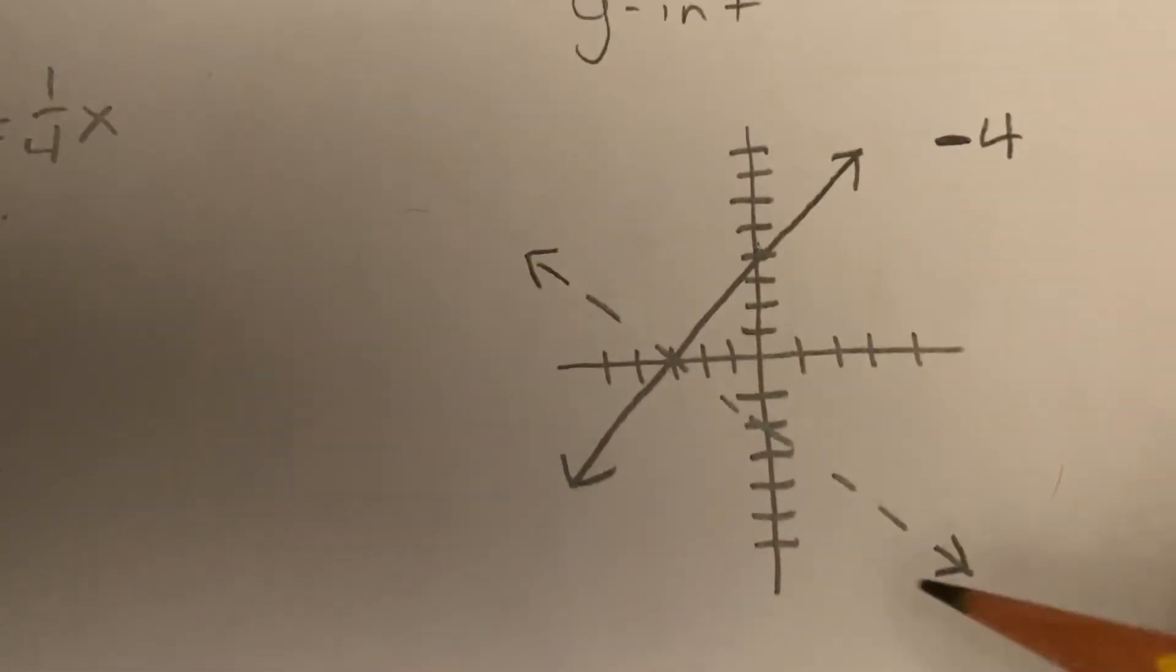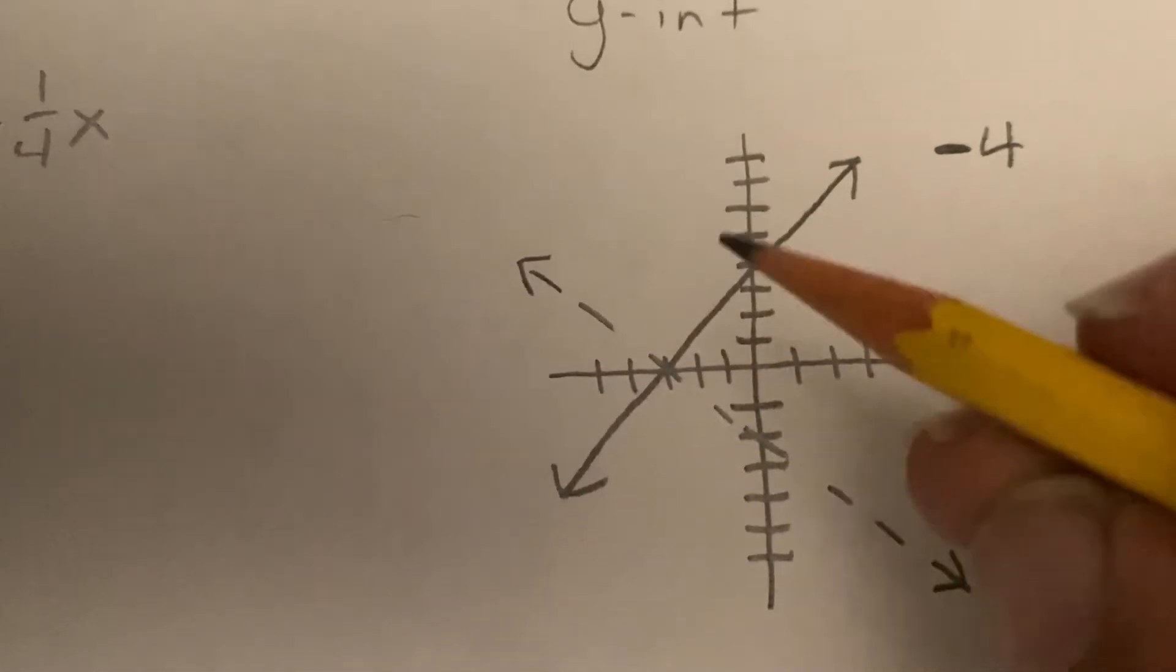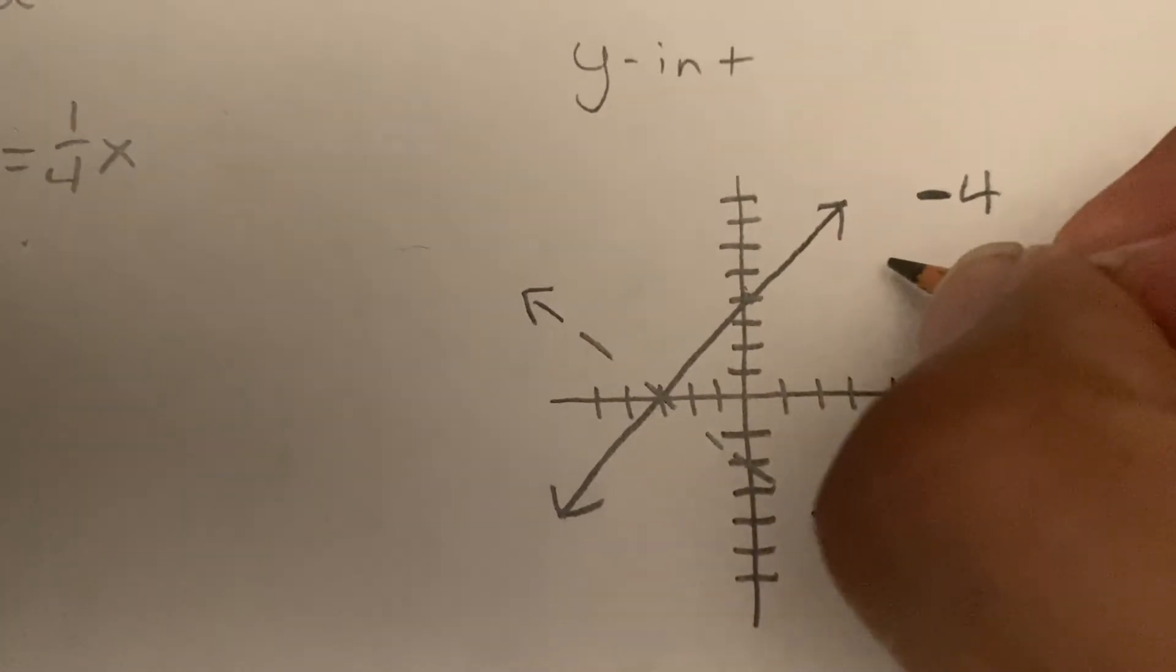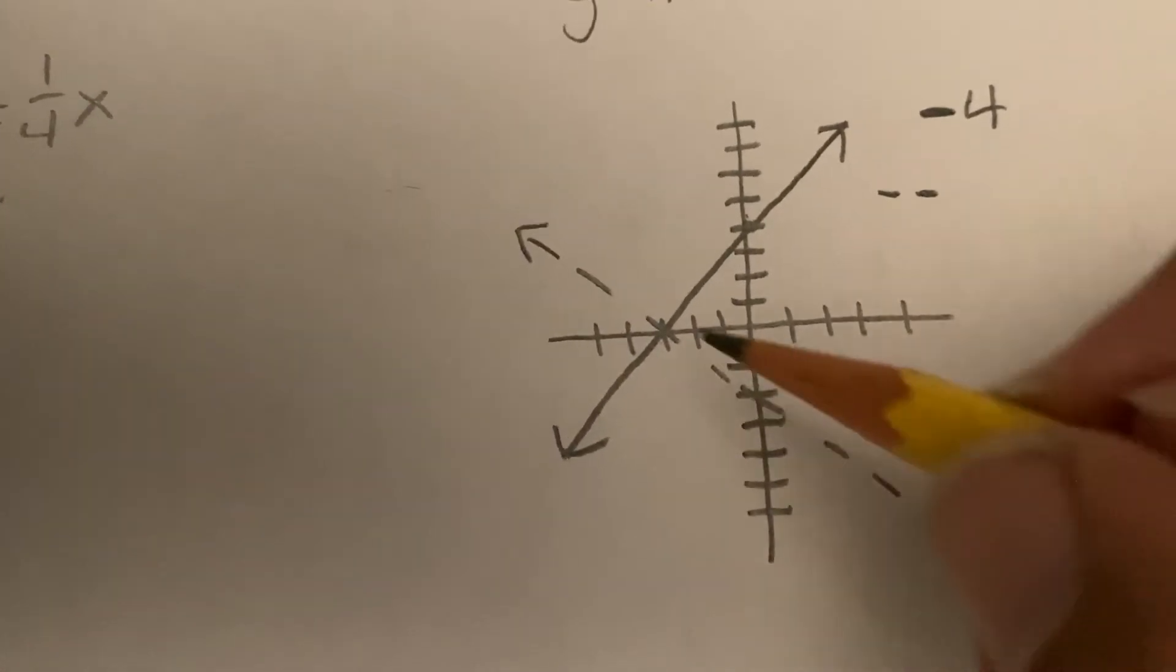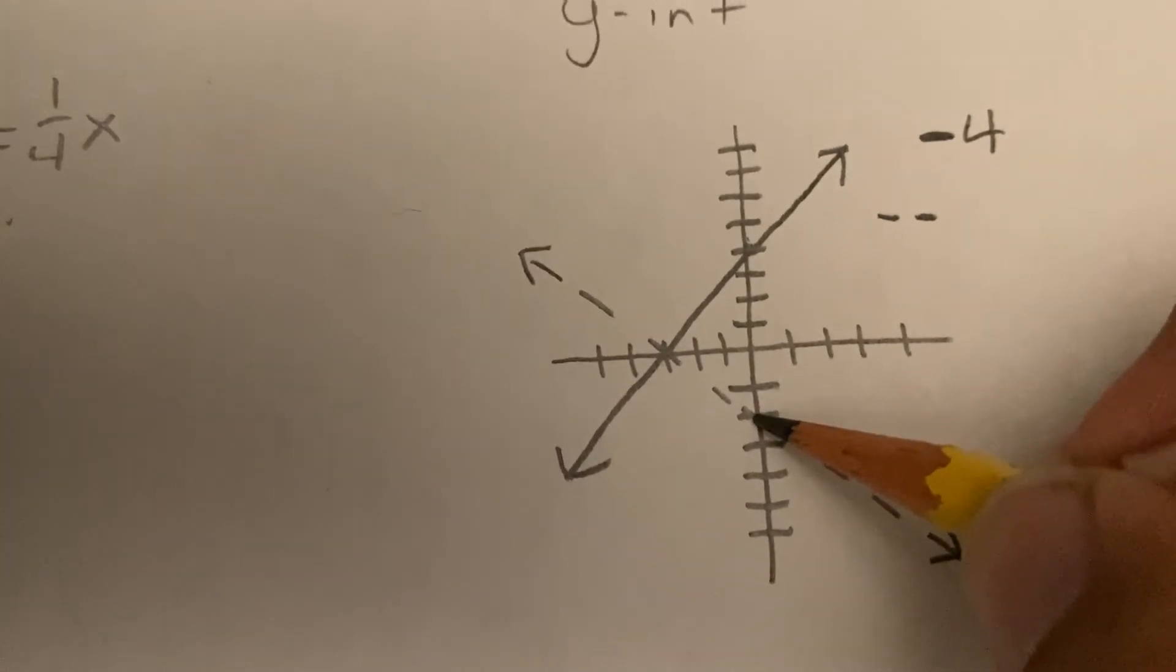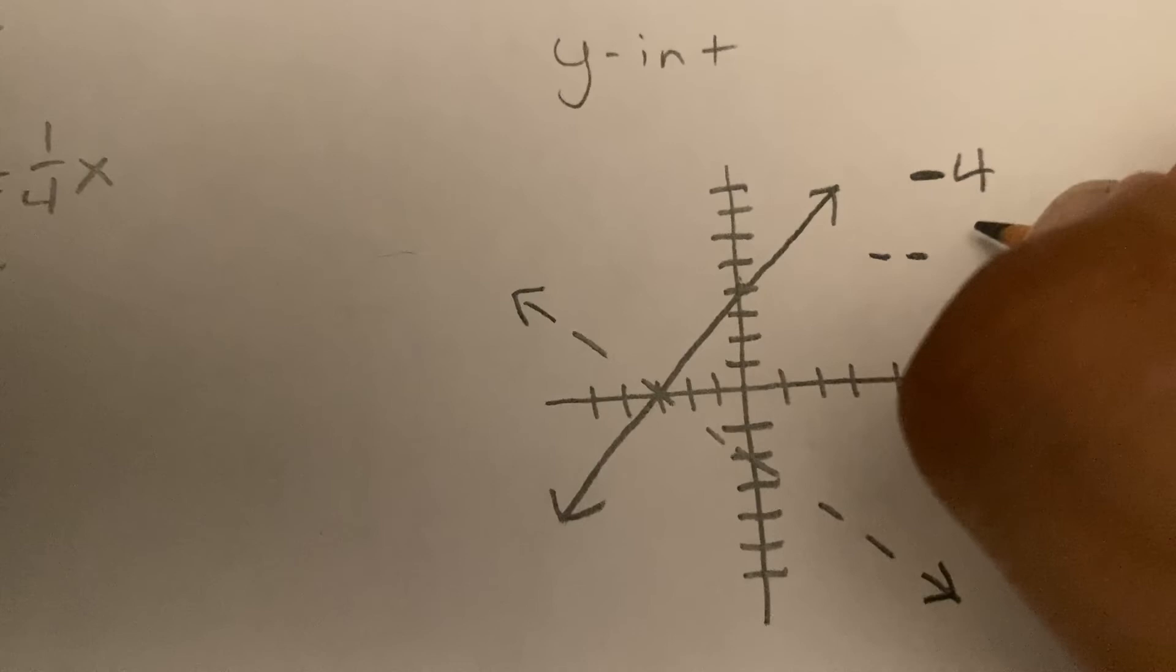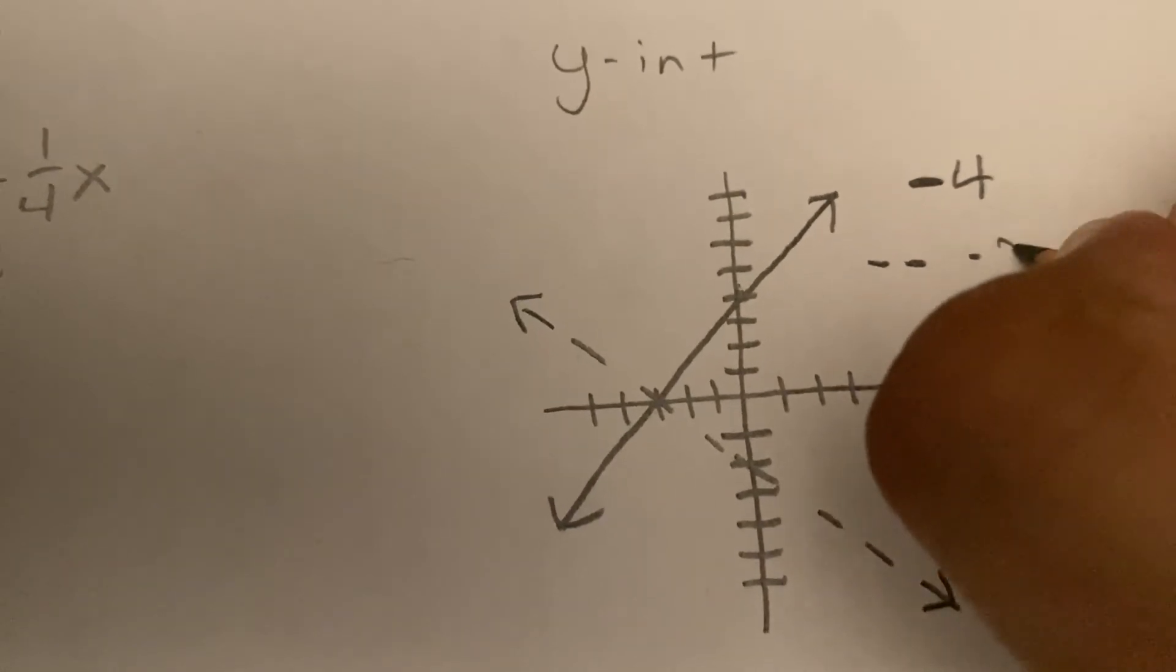Okay, what's the y-intercept for the dotted line? The y-intercept for the dotted line, let me make little dotted lines so you know which one I'm talking about. Which one's for the dotted line is going to be right here, which is negative 2. So I'm going to write negative 2 over here. Negative 2.